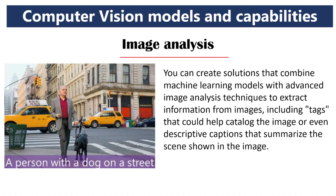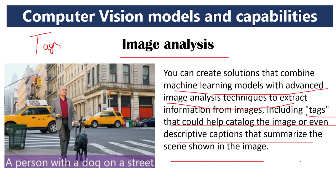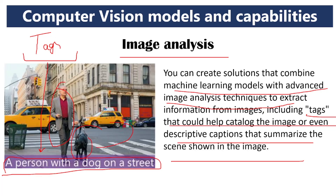Next is image analysis. Image analysis combines machine learning models with advanced image analysis techniques. Tags are included — for a picture, tags are given by the computer system that could help catalog the image, or even descriptive captions that summarize the scene. For example, the computer has automatically given a tag: 'a person with a dog on a street' — and you can see a person holding a dog on a road.